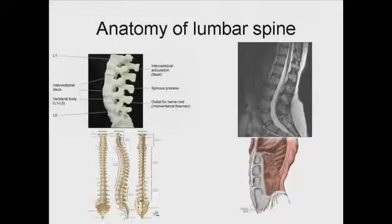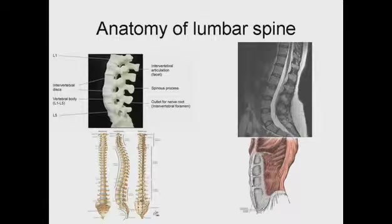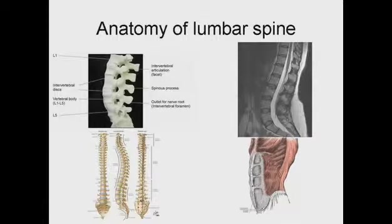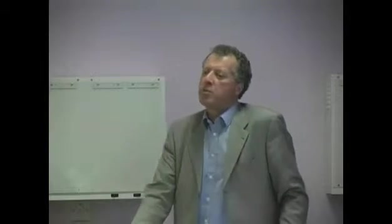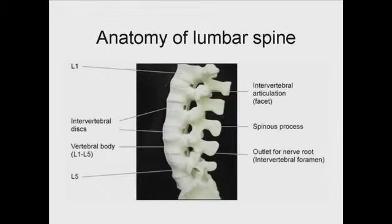If we look at the bones, this is a plastic model of the spine, looking at the lumbar spine — the low part of the back. Each bone is called the vertebra, and between them there are three joints: a big one which is the intervertebral disc, which Jill is going to talk about more, and two smaller joints called facet joints or apophyseal joints behind.